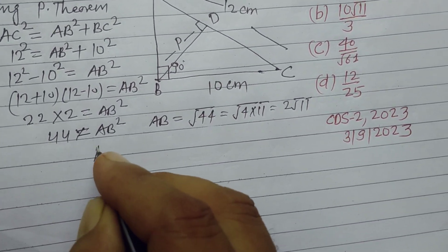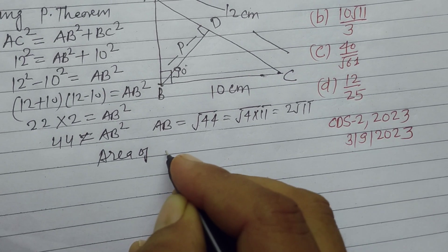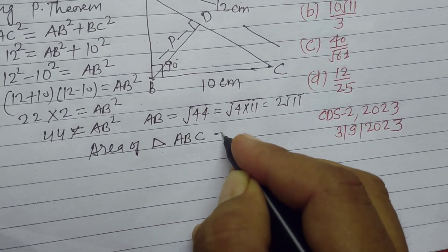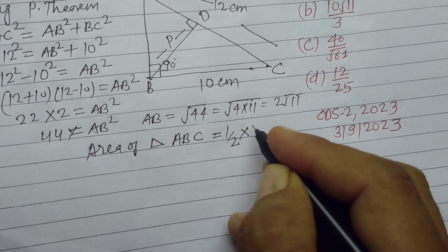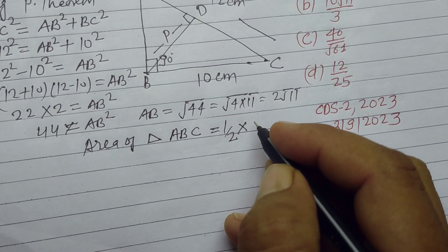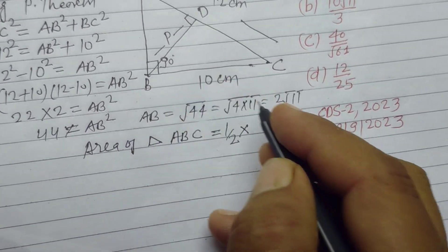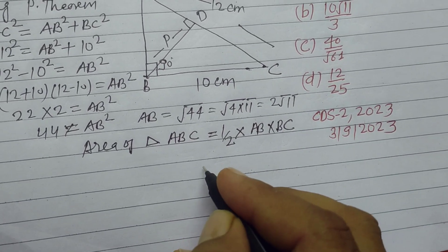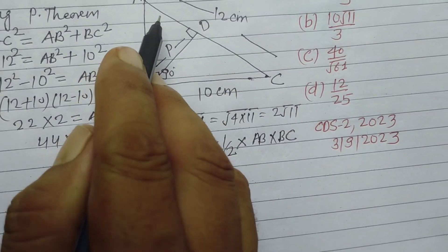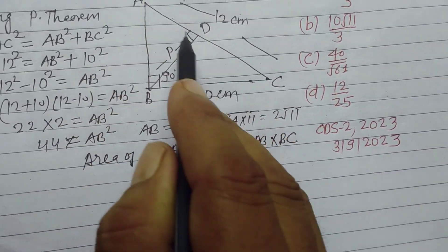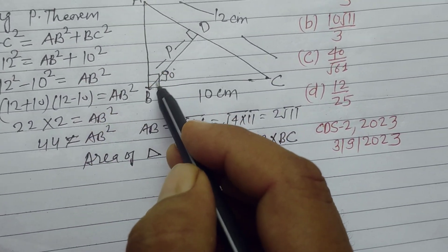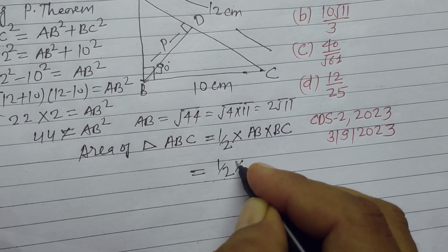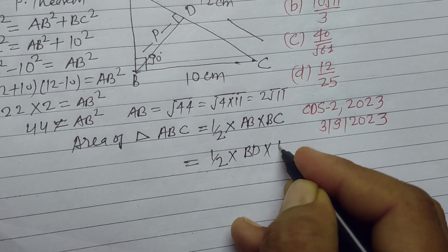Now area of triangle, right angle triangle ABC, is half base into height, perpendicular into base. Its perpendicular is AB into base is BC. This area can also be taken as base into height. Base is AC and this perpendicular height is BD. So half of BD into AC.